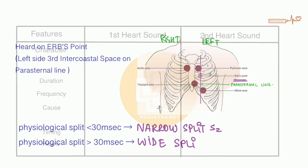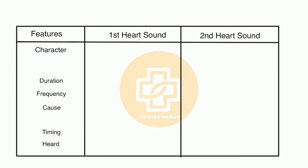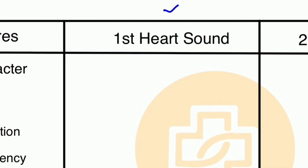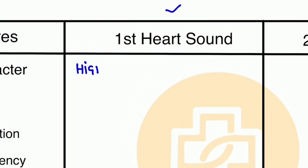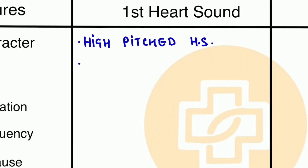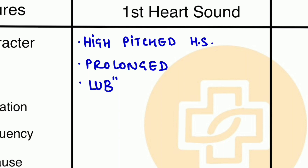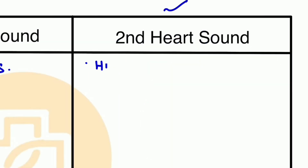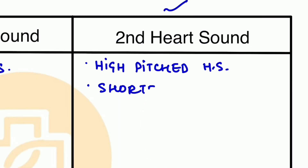Now let's discuss the difference between the first heart sound and the second heart sound. The first heart sound is a high-pitched heart sound which is slightly prolonged — from the 'lub and dub' we call it 'lub.' The second heart sound is also characterized by a high-pitched heart sound, but it is shorter than the first heart sound — from the 'lub and dub' we call it 'dub.'